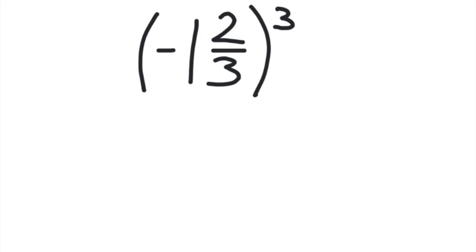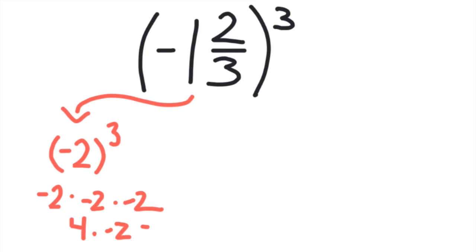Here we have (-1⅔)³. Let's start by estimating. I'm going to round this to (-2)³. That means -2 × -2 × -2. And that's going to be 4 × -2, which gives us -8.